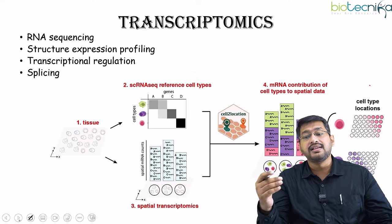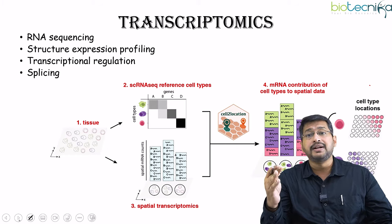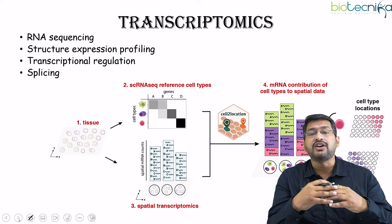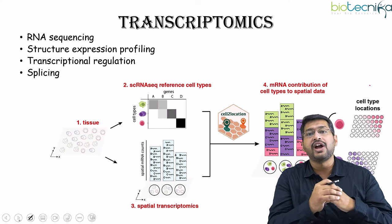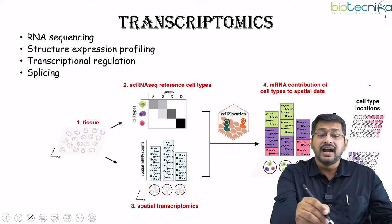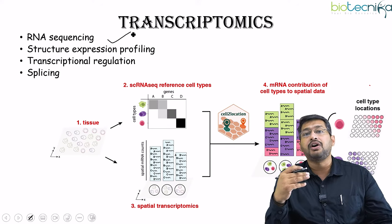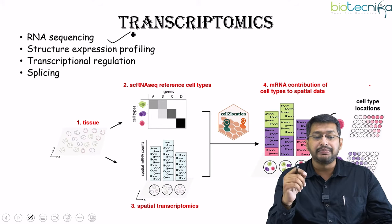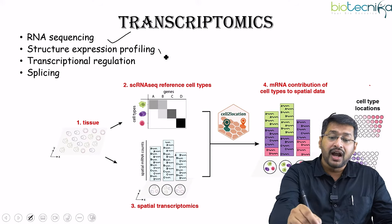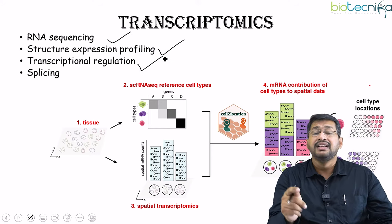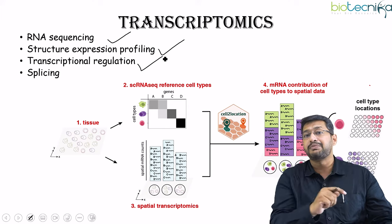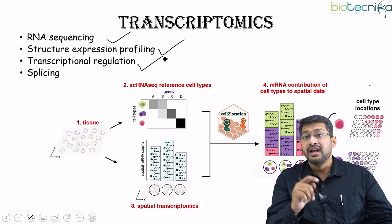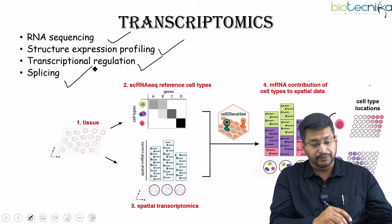The next part is transcriptomics. The regulatory component cannot be studied at the DNA level, so we rely on RNA — specifically mRNA — for regulatory analysis. Using transcriptomic analysis, we can understand gene expression profiling, transcriptional regulators and master transcriptional regulators, and very importantly, the splicing mechanisms between introns and exons.